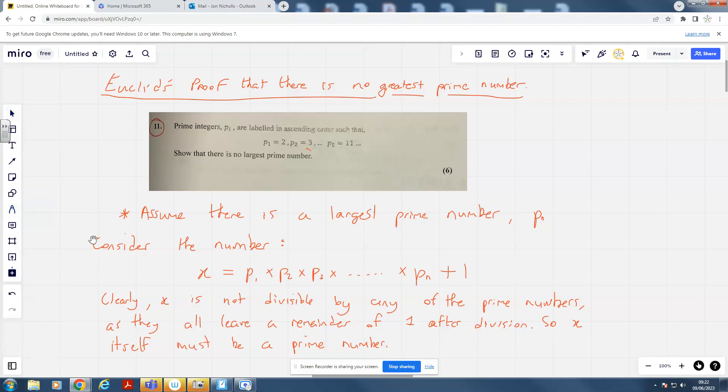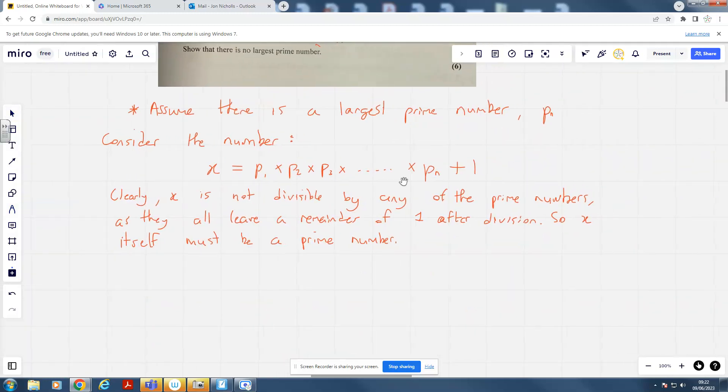But hang on a second. We said that P_n was the largest prime number, but X is clearly larger than P_n, because all of these are integers and we're multiplying them together and then adding 1. They're positive integers as well. So this leads to a contradiction, as X is clearly larger than P_n.